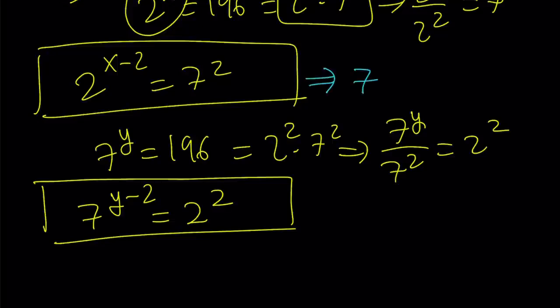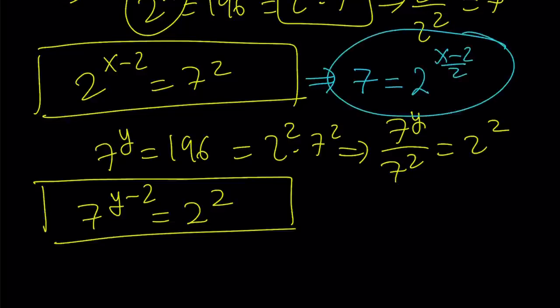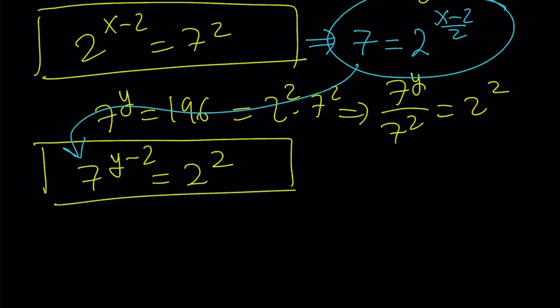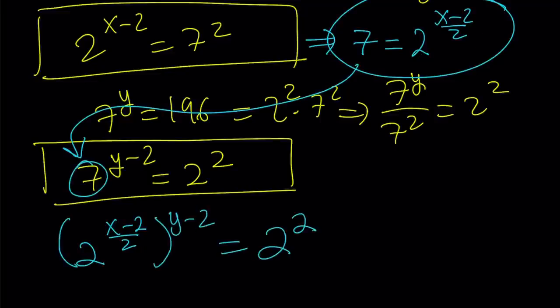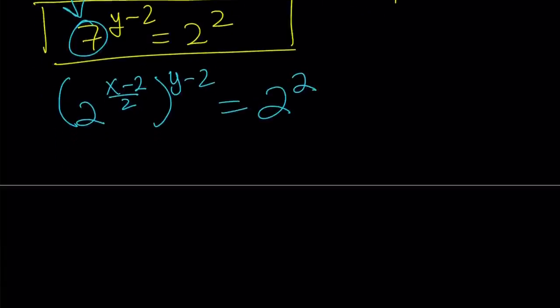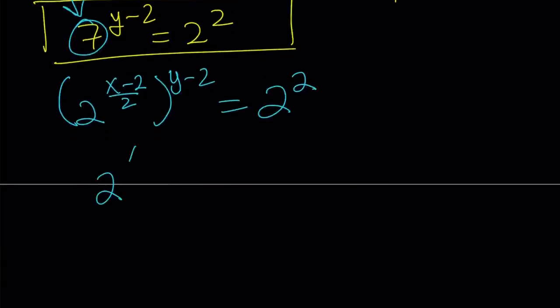Raise both sides to the power 1 half. So, 7 is going to equal 2 to the power x minus 2 divided by 2. And let's go ahead and substitute that here. We're going to get something super nice. So, I have 2 to the power x minus 2 over 2, which replaces the 7. And raise it to the power y minus 2, and that's going to equal 2 to the second. Notice that we have the same base now, so we can go ahead and multiply the exponents. That's going to be like x minus 2, y minus 2, divided by 2, equals 2 to the second. Raise both sides to the second power, so you can get rid of the fraction.